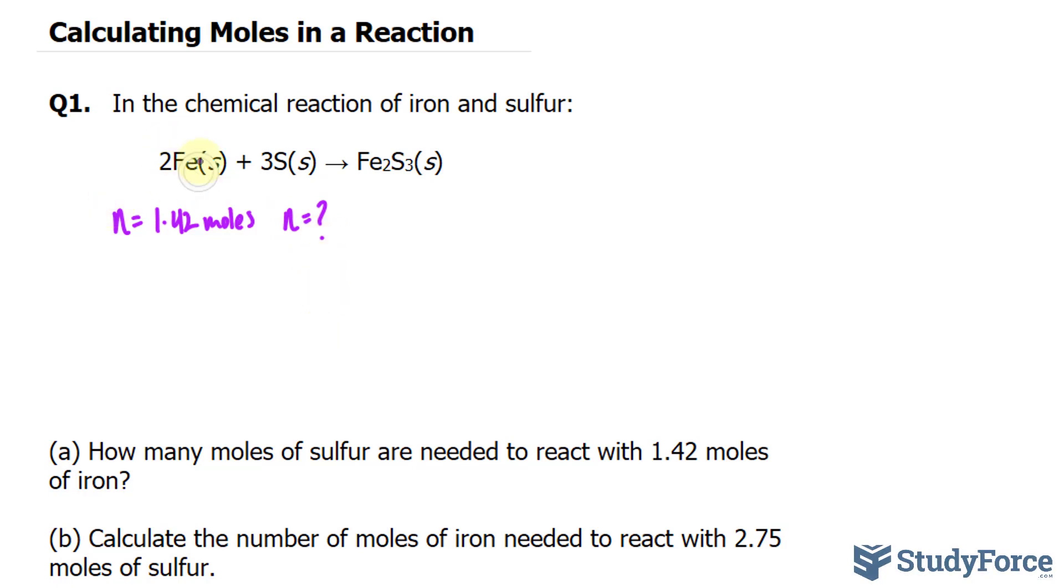Notice that we have a ratio of two iron atoms to three sulfur atoms. From that, we can set up a mole ratio. And here's what I mean. Two atoms of iron per every 1.42 moles of iron. And we can make this equal to three atoms of sulfur to an unknown amount of moles. This is called a proportion, where you have one ratio equal to another ratio. And this is one method to solving this.